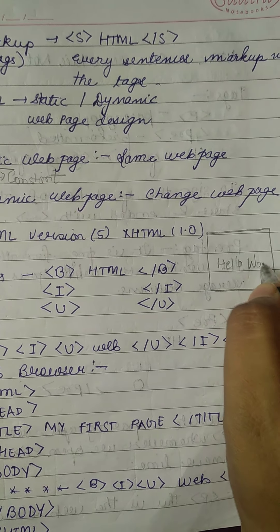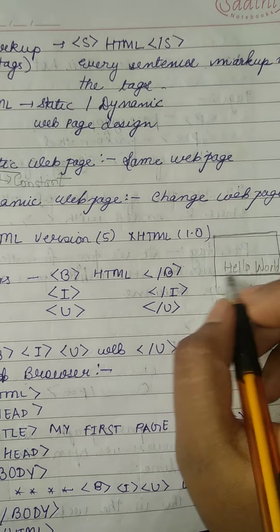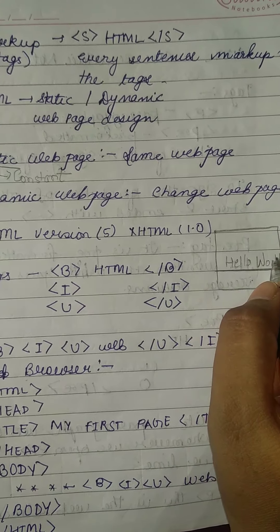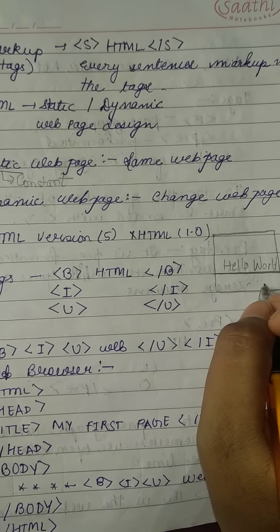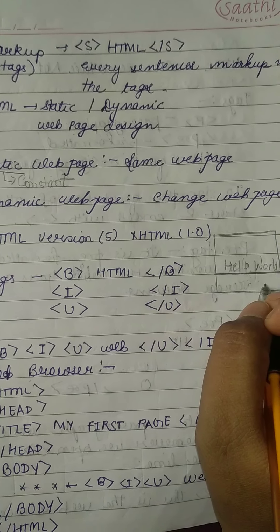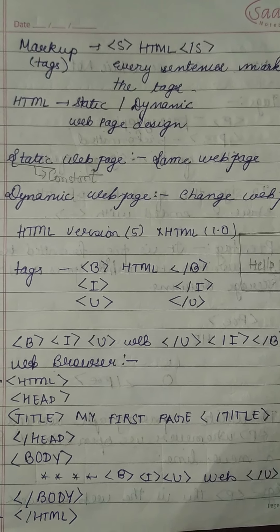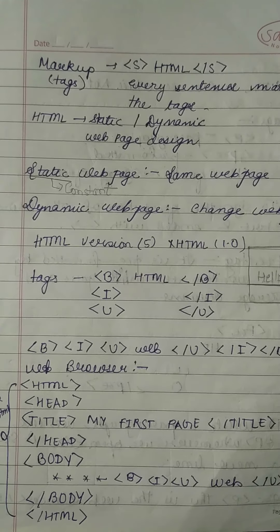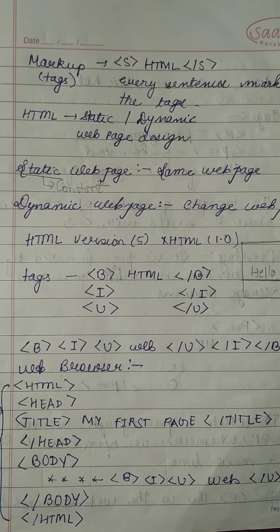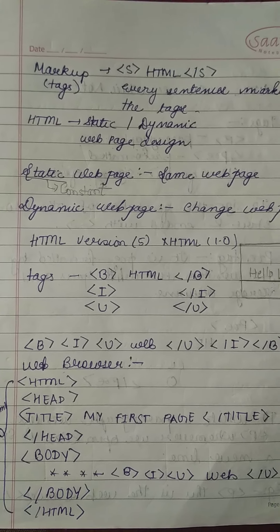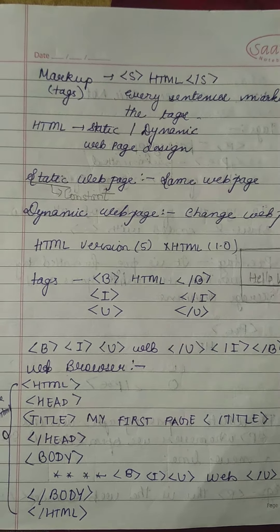For example, if we write 'Hello World,' it is not changing — we don't have any link to go to another page, we can just view this page — so it is a static page. And if you take the example of an online form submission, it has a link, you submit it and it goes to another page, so that is a dynamic page.